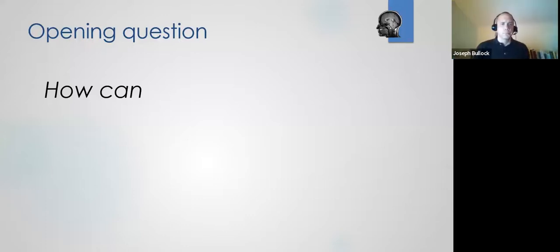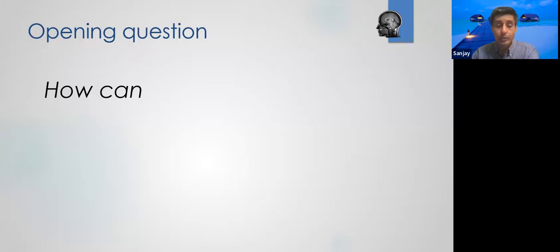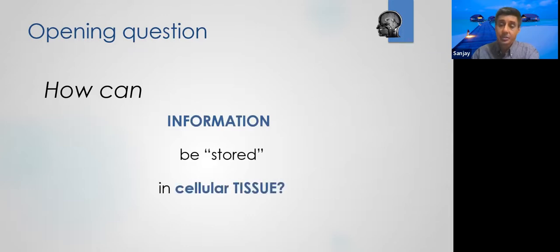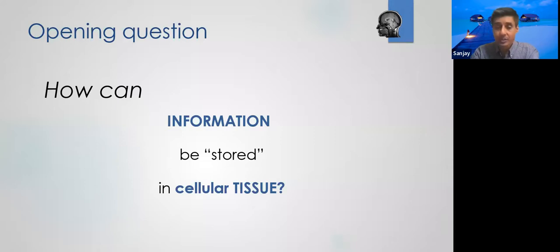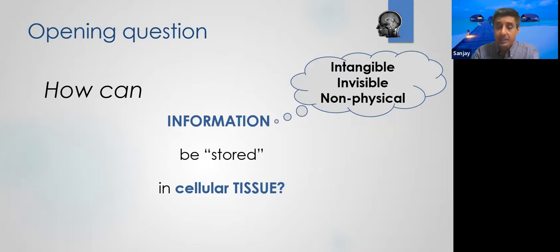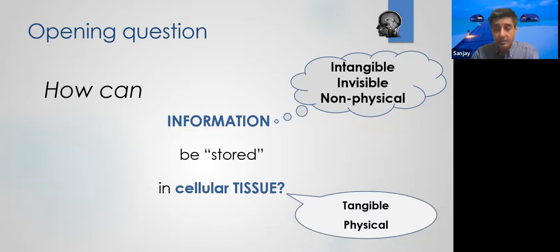We'll start with the question I asked last time — this is very fundamental to information in the brain. How can information be stored in cellular tissue? This is something very important to neuroscience in general. Information is intangible — you can't hold onto it, it's not physical, it's invisible in a sense. Cellular tissue is the opposite — it is tangible, it is physical. So how can something invisible and non-physical be stored in physical tissue?